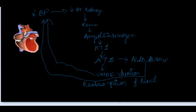So from the kidney, from the JG cells, renin is released. Renin is responsible for the conversion of angiotensinogen in the liver. It converts angiotensinogen to angiotensin 1.